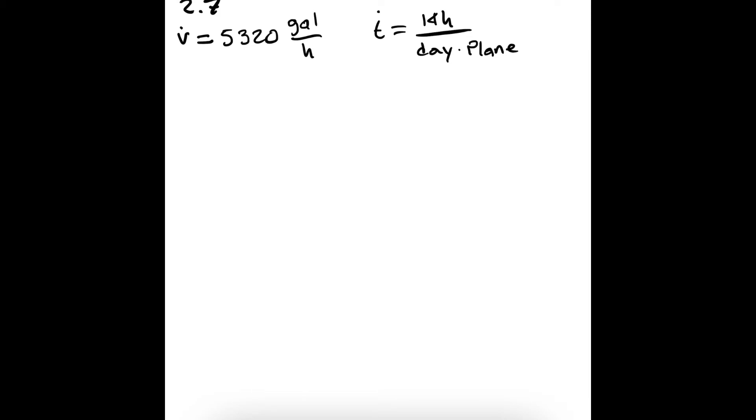Then they give us this conversion ratio: seven tons of crude oil produces one ton of kerosene. Then they gave us the density of kerosene, that is 0.965 grams per centimeter cubed.